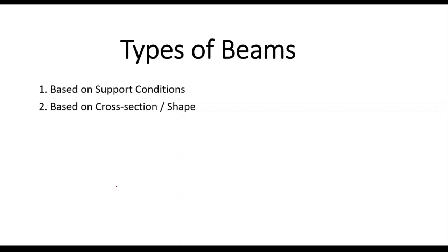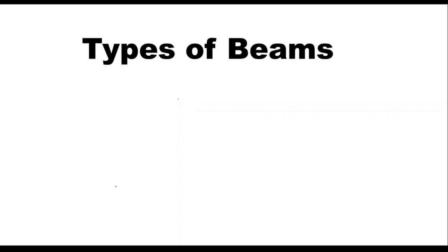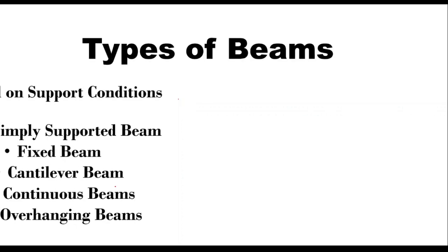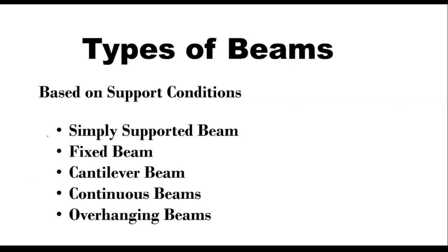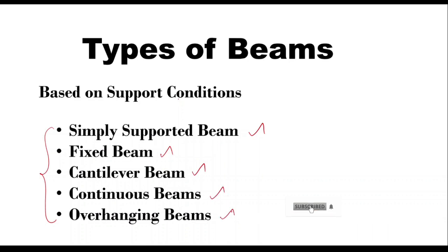Now let's see types of beams based on support conditions. These are the beams based on support conditions: simply supported beam, fixed beam, cantilever beam, continuous beam, and overhanging beams. Now let's know in detail about each and every type of beam.